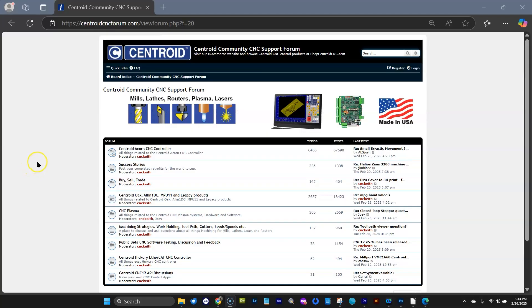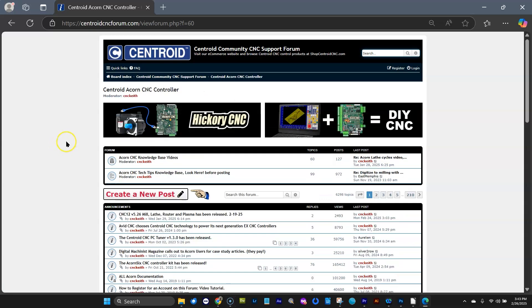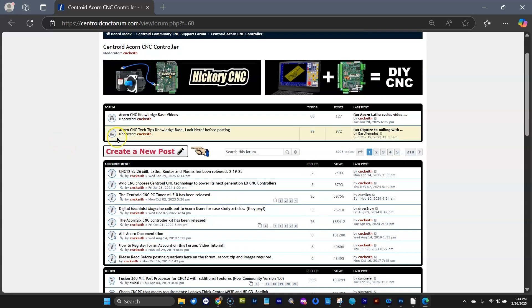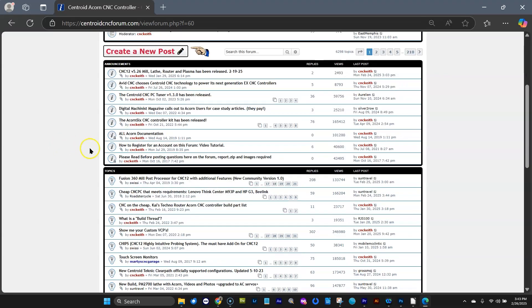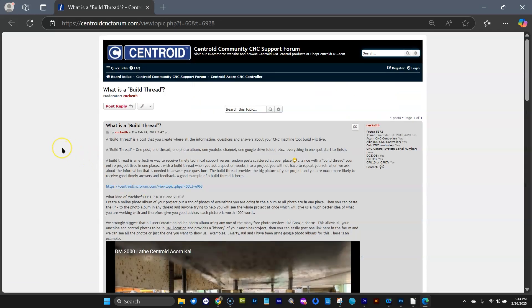Hey everyone, I invite you to create a build thread on Centroid's free CNC technical support forum. That's centroidcncforum.com. Let me give you an example. If I had an Acorn, I would enter into the Acorn forum and then click on create a new post. There's a great post down here called 'What is a Build Thread' and describes the advantages and why you would want to take the time to create a build thread.